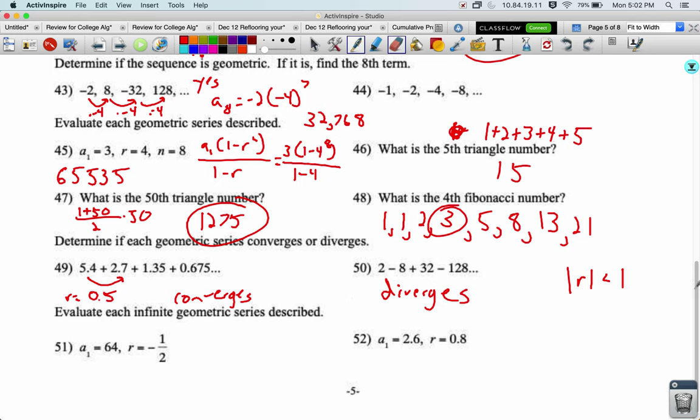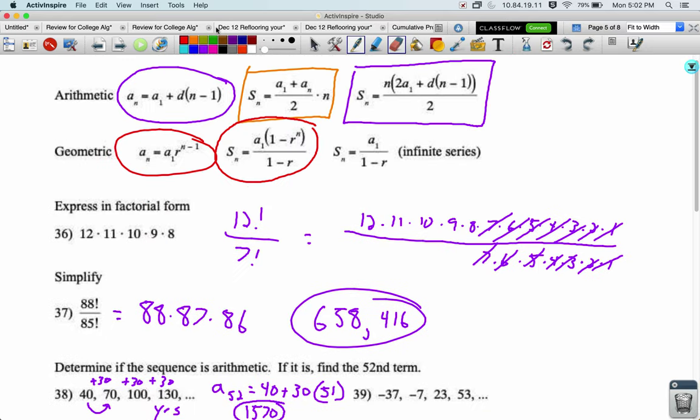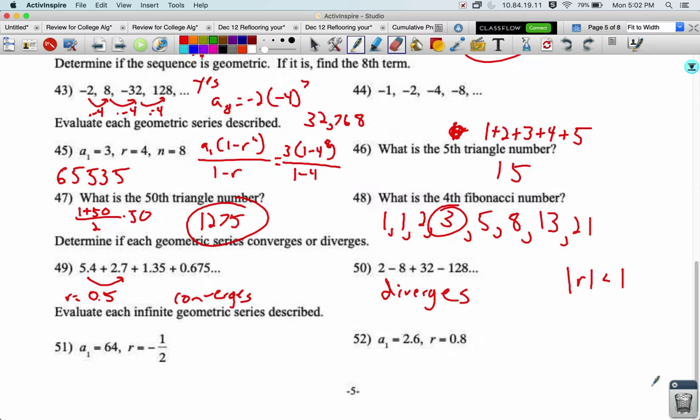Now that we know that something converges, we can just use a formula to find what it converges to. It's this formula here, it's actually very easy: a sub 1 over 1 minus r. So 64 over 1 minus negative one-half. 64 divided by 1.5 essentially is 42.66.